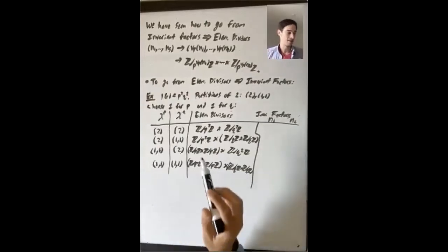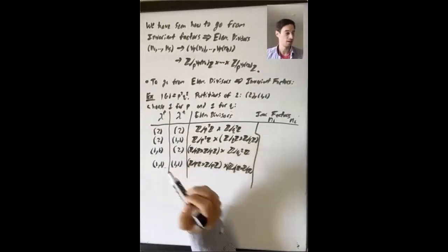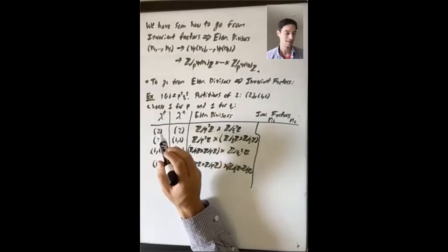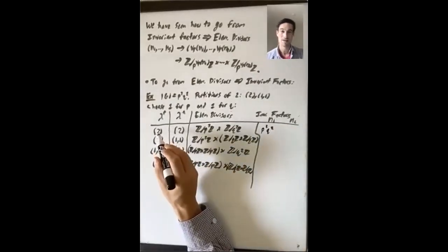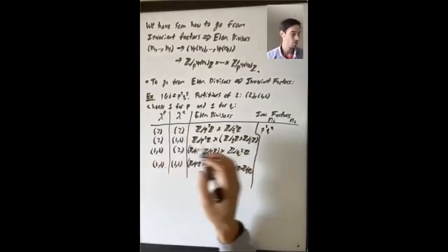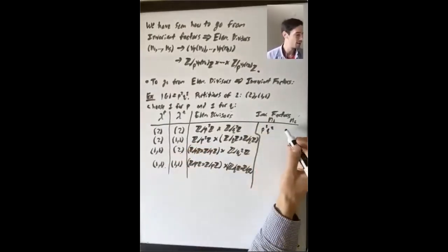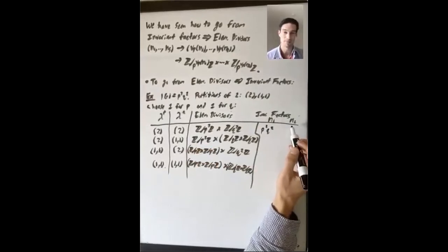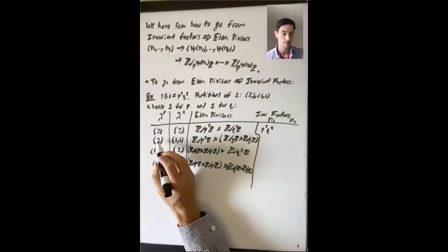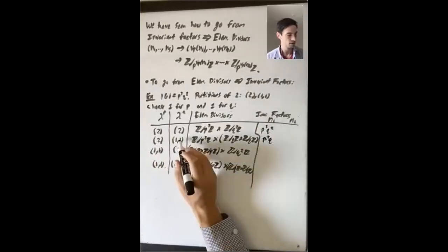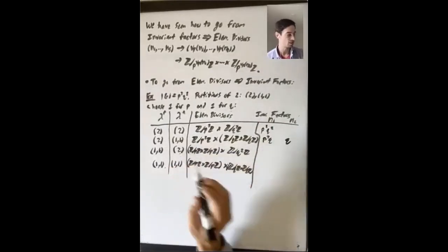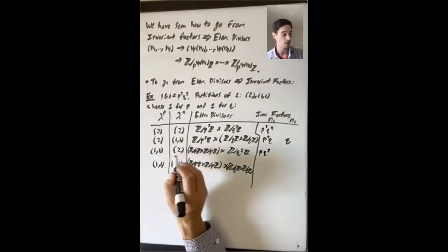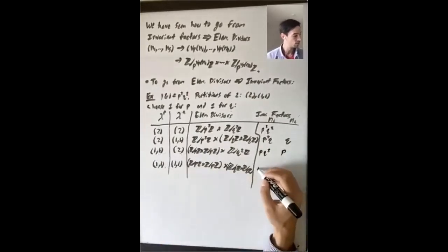How do you get invariant factors? You match up parts of the partitions. n1 is p to the first part times q to the first part. So for (2,2): n1 = p²q². For (2, 1,1): n1 = p²q, and the second invariant factor is p⁰·q = q. For (1,1, 2): n1 = pq², second invariant factor is p·q⁰ = p. For (1,1, 1,1): n1 = pq, n2 = pq. If there is no second part, you treat that as p to the zero, which is 1, and if an invariant factor is 1, that's Z mod 1Z which is trivial and we don't include it.